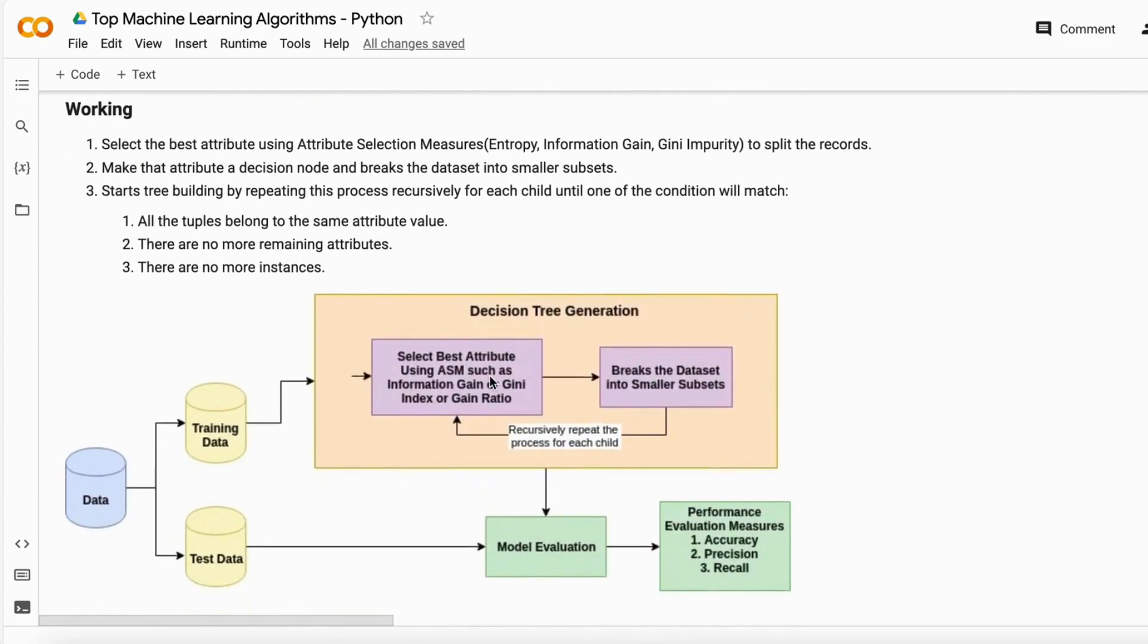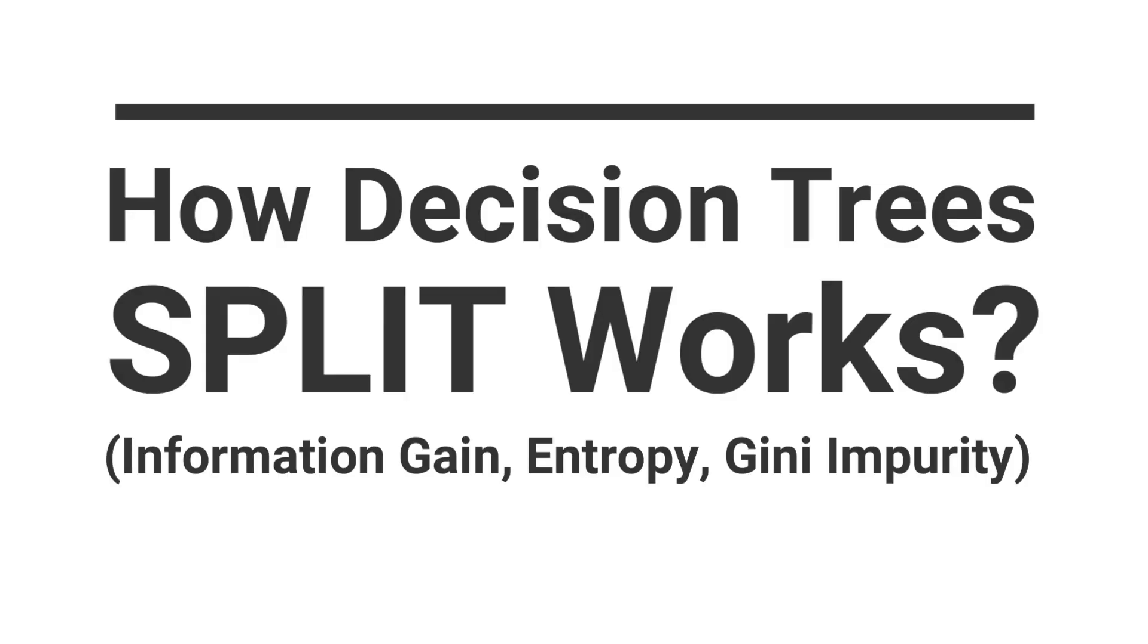And decision tree working is explained at a very high level. It selects the best attribute based on the attribute selection measures. And these selection measures are entropy, information gain, and Gini impurity to split the record. I will explain about entropy, information gain, and Gini impurity in our next video with proper examples that how it splits the decision tree as well.